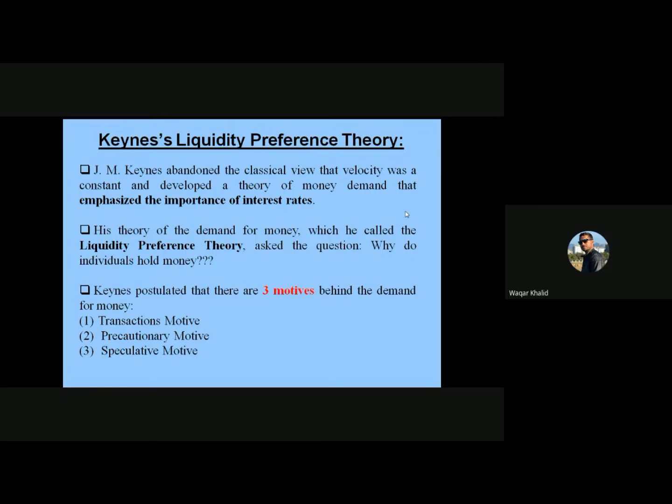Fisher viewed that interest rates have no relationship with the money supply, but J.M. Keynes focused on the point that the interest rate is the most important factor in determining the demand for money. His theory of the demand for money he called the liquidity preference theory.